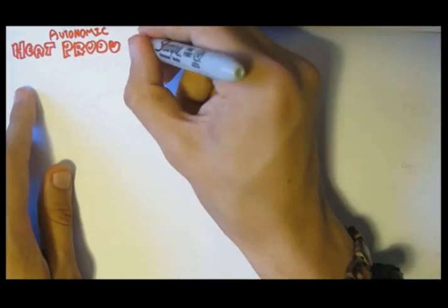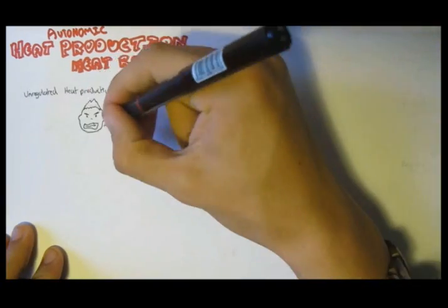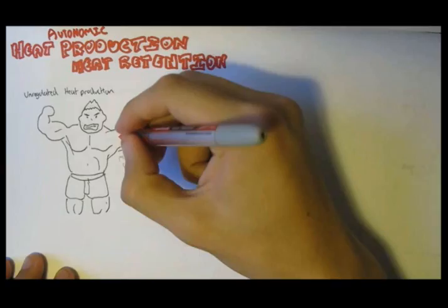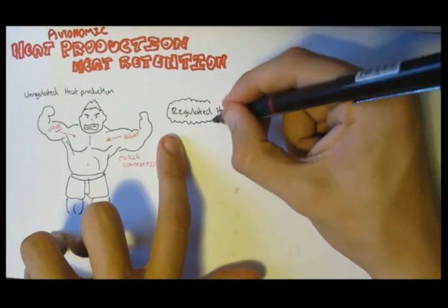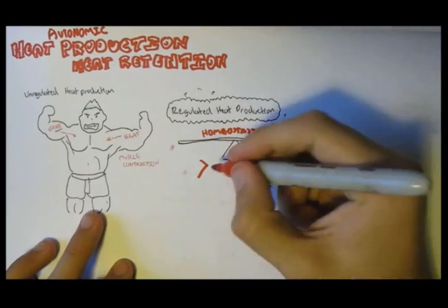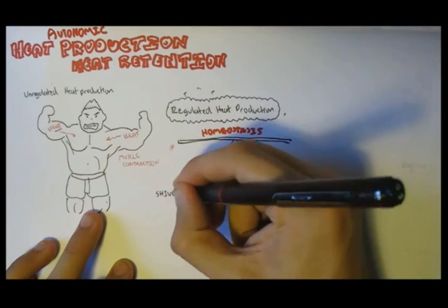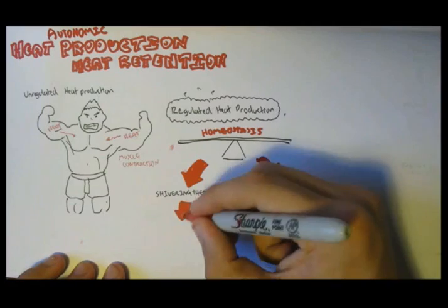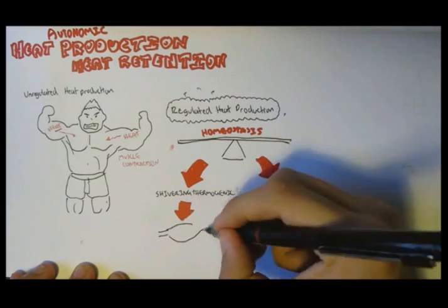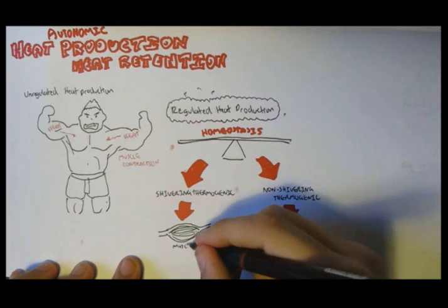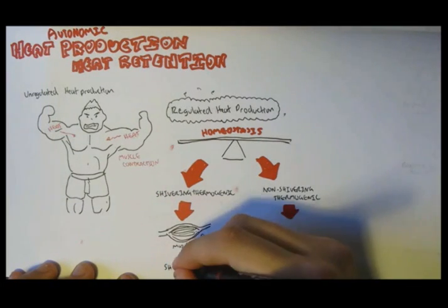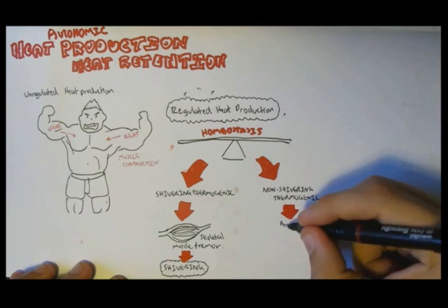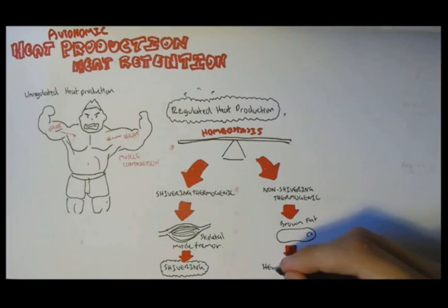The autonomic response to cold environments, where the body tries to produce or retain heat, can be divided into unregulated heat production — for example, from muscle contraction — or regulated heat production, which is basically shivering thermogenesis or non-shivering thermogenesis. Shivering thermogenesis is caused by skeletal muscle tremors, which produce the action we call shivering. The non-shivering mechanism comes from brown fat in the body, which causes heat retention.